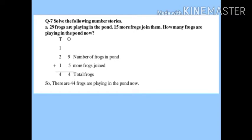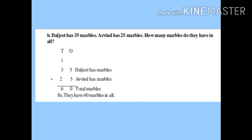Next story: Daljit has 35 marbles, Arvind has 25 marbles — how many marbles do they have in all? The word 'all' means addition. Arrange tens and ones, then do 35 plus 25.